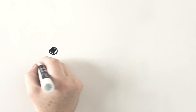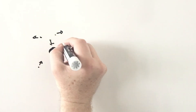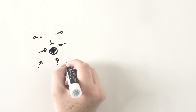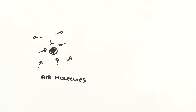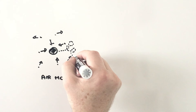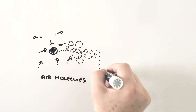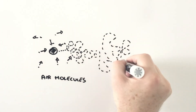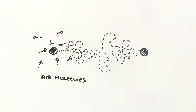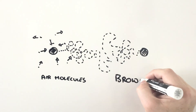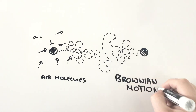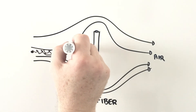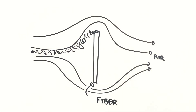Because these particles are so small, they have very, very little inertia, and they dance around as they're bombarded by the air molecules around them. This rather unusual behavior is called Brownian motion, after the first person to observe it. And as they dance, they end up colliding with the filter and being captured.